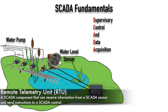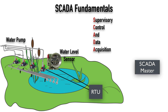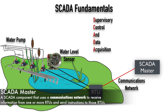However, we might be monitoring lots of systems — maybe we've got several ponds that we're trying to monitor. We need some central control that talks to all of the RTUs we have out there. That component of a SCADA system is called the SCADA master, and the SCADA master connects with the RTU using a communications network.